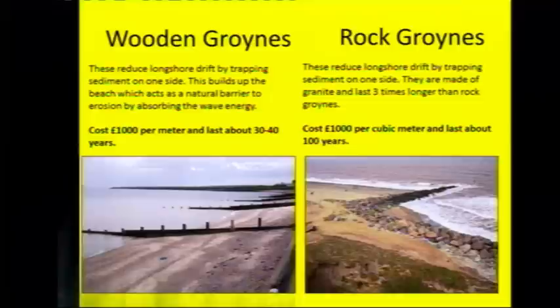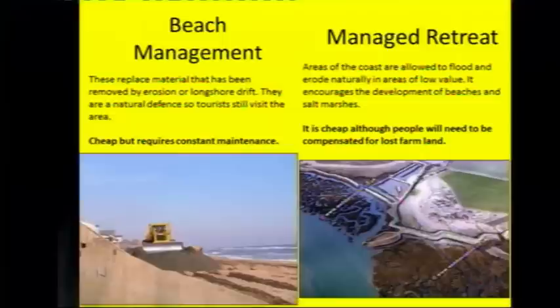Wooden groins versus rock groins. Well wooden groins cost £1,000 per meter and they only last about 30 to 40 years. You can see in the photograph that they're starting to get a little bit worn away with tourists perhaps standing on them and the sea starting to wear them away. Rock groins however, they cost £1,000 per cubic meter and last about 100 years so they're slightly more effective.